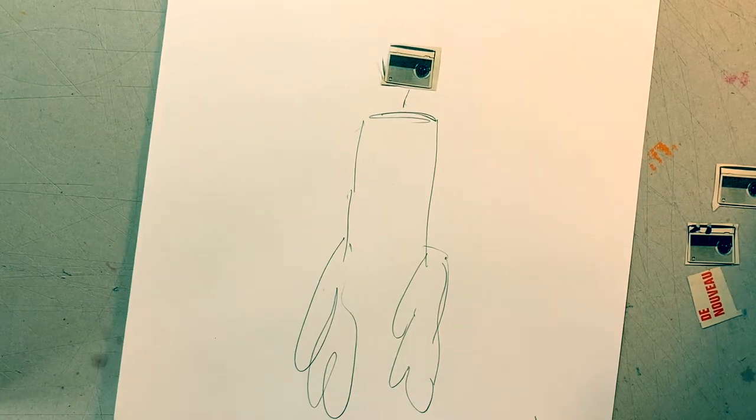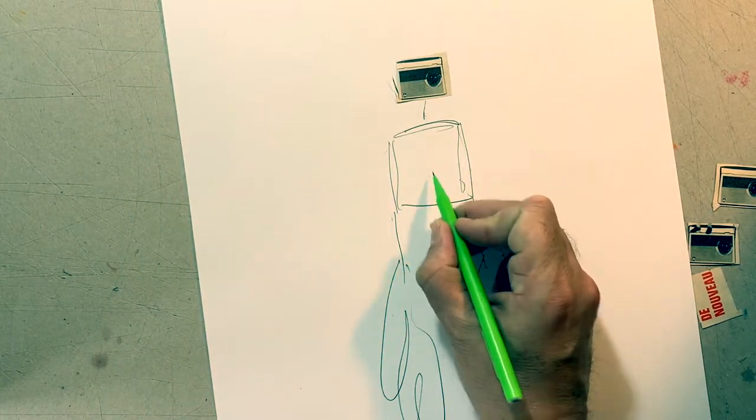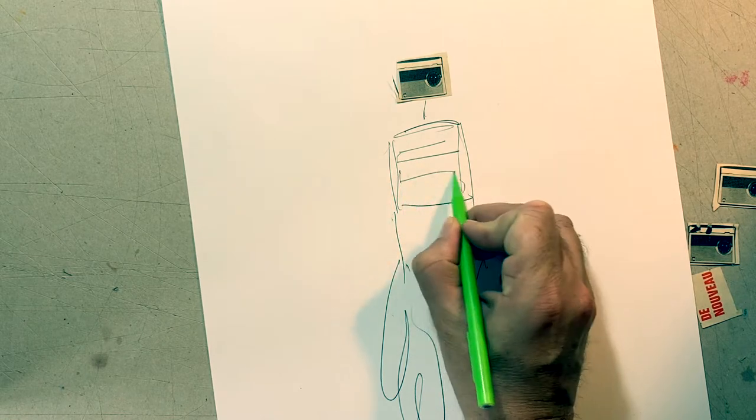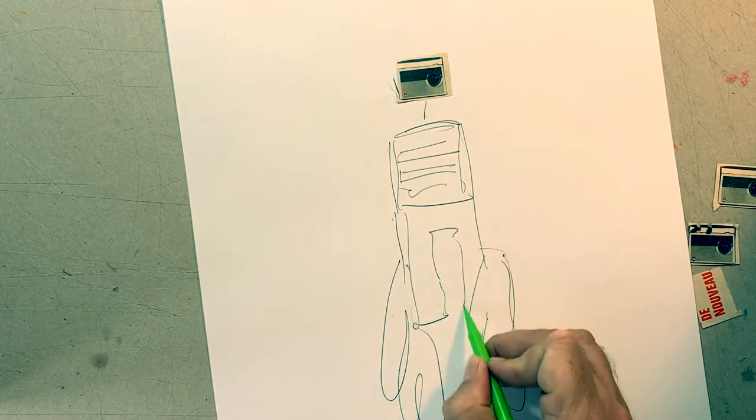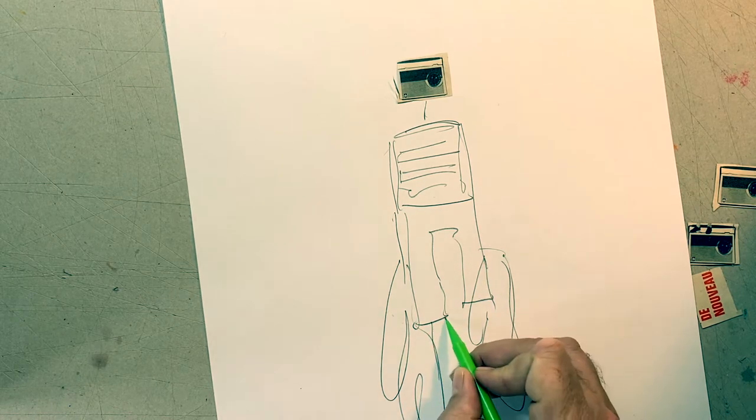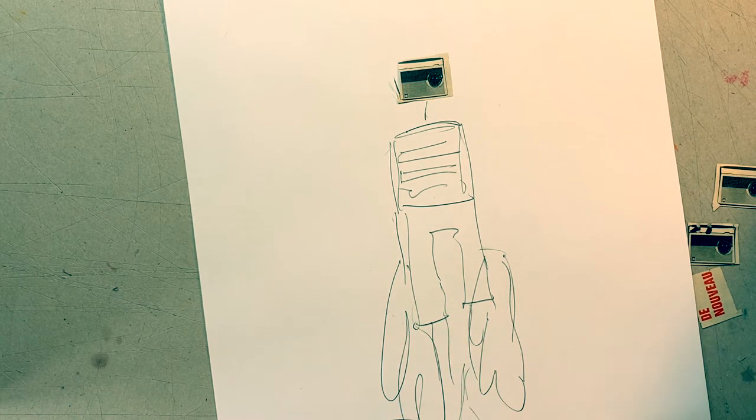I'm now going to fill in the body part, which essentially is going to be a square box with lines in it, and I'm going to draw in the leg section. Again I'm not being too careful, two legs and two giant feet.